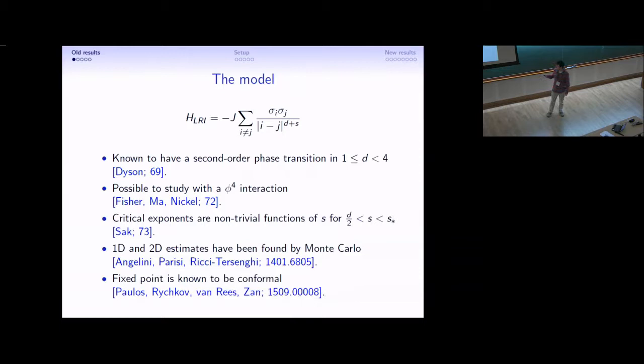On the other hand, if S becomes too small, then Phi to the fourth will be irrelevant and the mean field theory will become exact. So this is the non-trivial region where I'm going to be interested in the model.